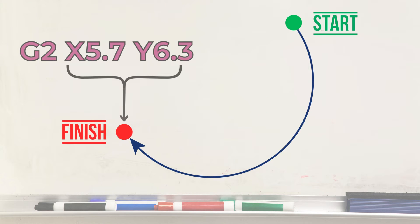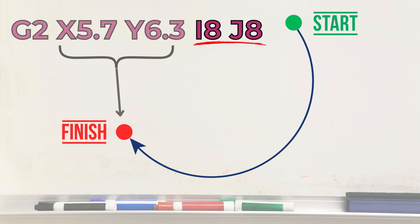When R is specified, the movement will be along an arc with a radius of R. When I and J are specified, they represent the arc's center point, and the controller calculates the radius.